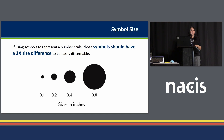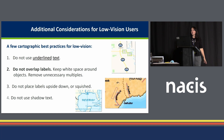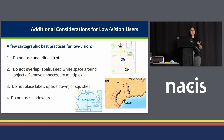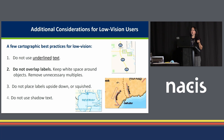When symbolizing quantities on a map, the symbol size should double in size for each increment scale to be more easily discernible. For low vision users: do not use underlined text — it can be used for hyperlinks, but the line underneath blurs everything together for low vision users. Do not overlap labels, keep white space around your objects, and remove unnecessary multiple labels. Do not place labels upside down or squished — maintain kerning between letters so they don't blend together. Do not use shadow text; halos are a good alternative because they pop out your imagery and surround the text completely without blurring elements.